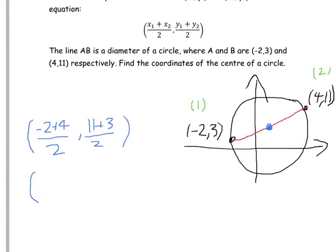(-2 + 4) is 2, divided by 2 is 1, and 11 + 3 is 14, divided by 2 is 7. So the centre of this circle would be (1, 7).